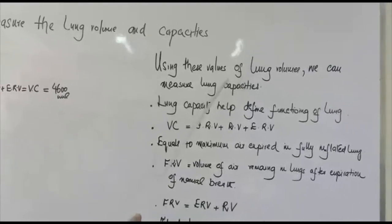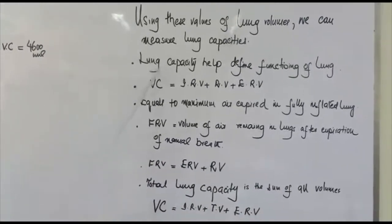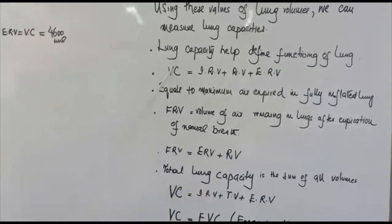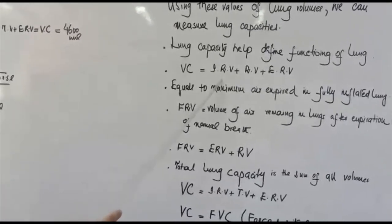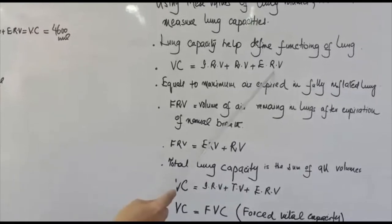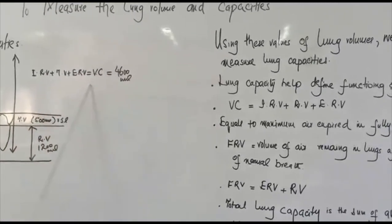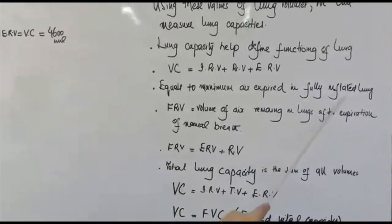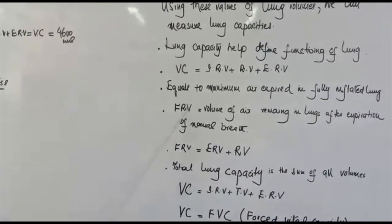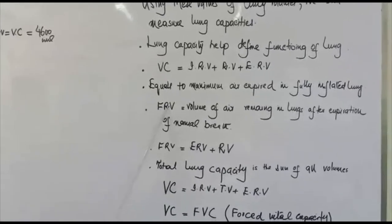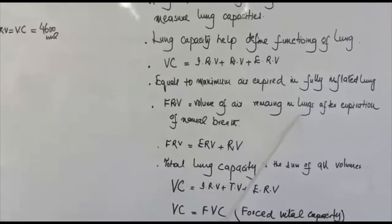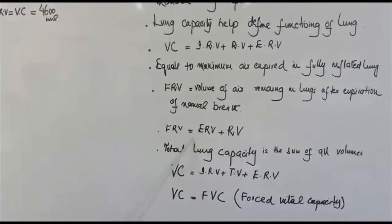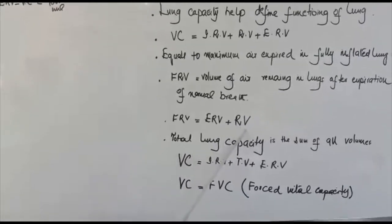Using these values of lung volumes, we can measure the lung capacities. Lung capacities help define the function of the lung. Vital capacity equals inspiratory reserve volume plus tidal volume plus expiratory reserve volume — it equals the maximum air expired from fully inflated lungs. Functional residual volume is the volume of air remaining in the lungs after expiration of a normal breath, and it equals expiratory reserve volume plus residual volume.